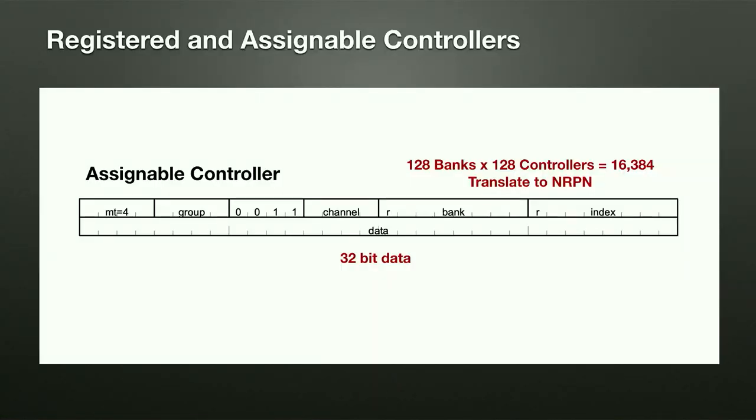There are also registered and assignable controllers at the channel level — the replacement for RPN and NRPN. In translation they map directly back to RPNs and NRPNs. There are 16,384 registered and 16,384 assignable, all with 32-bit data. It's as easy to use as a control change message today — just one message — and you can ramp that data as much as you like. Now Florian will continue discussing the more mechanism-oriented features of MIDI 2.0.